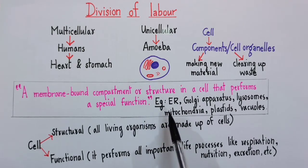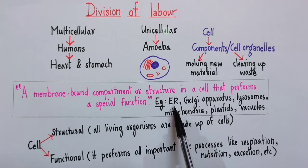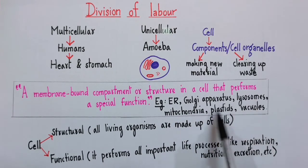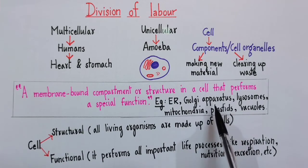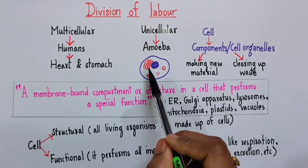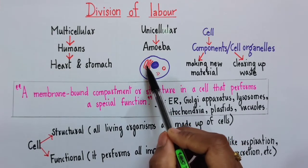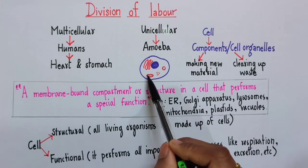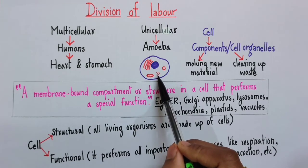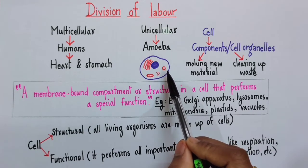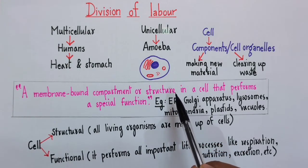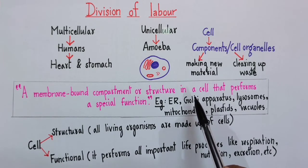Now what are the examples? We have six examples: ER that is endoplasmic reticulum, Golgi apparatus, Lysosomes, Mitochondria, Plastids, and Vacuoles. We will be discussing about each of them in detail — their function and structure — in our subsequent videos. In this diagram I have drawn this ribbon-like structure which is your endoplasmic reticulum, this oval-shaped structure is your mitochondria, the dot dot dots represent ribosomes, and this is one vacuole. There is a definite way in which we represent and draw them, which we will discuss in subsequent videos.